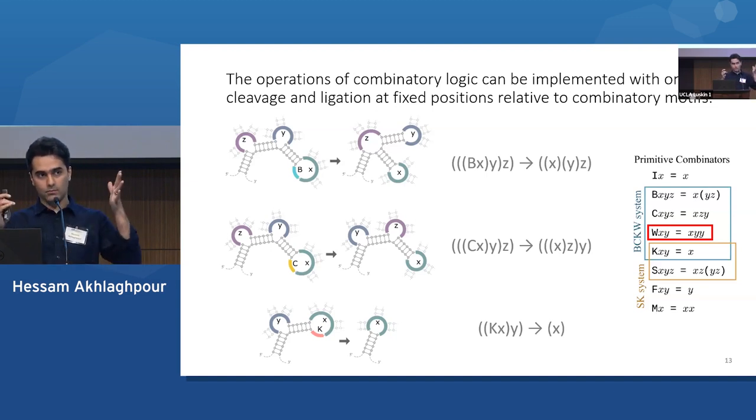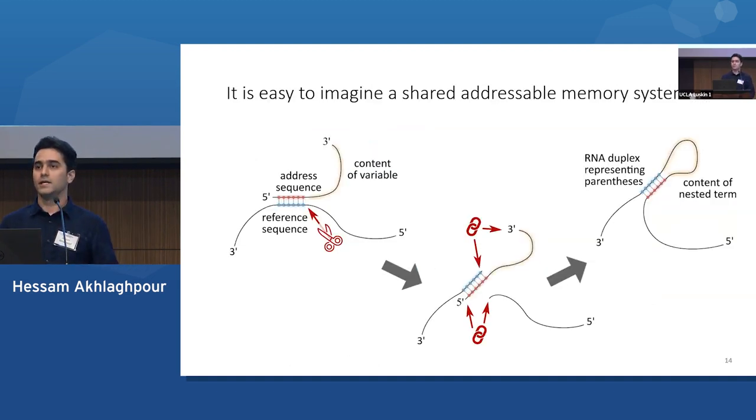So I'm going to explain what that is. So since we can imagine parentheses as duplexes, this presents us with an opportunity to implement a system of addressable memory. So we can imagine every variable has an address sequence. And that variable can be referred to by its reverse complementary sequence that I'm just calling a reference sequence. So two strands where one refers to another can come together in space. They can base pair. And with a single cleavage and two ligations, you can get the content of that variable nested exactly where it was referenced by the referencing strand.